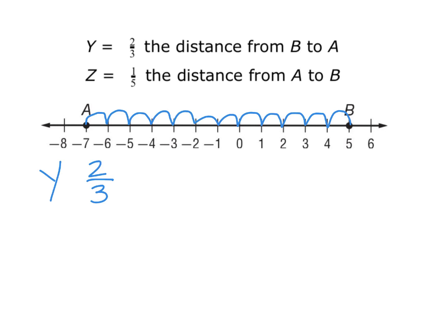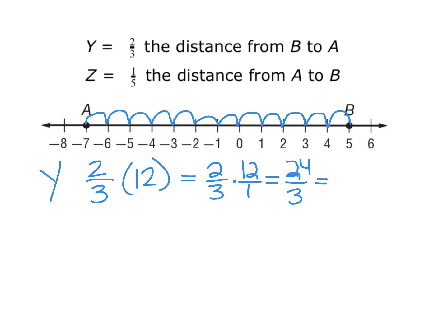I'm going to multiply two-thirds by twelve, since that's my full distance. When multiplying fractions, you multiply numerator times numerator and denominator times denominator. I can put twelve as a fraction with a one in the denominator, giving me twenty-four divided by three, which equals eight units. So Y is eight units from B toward A.